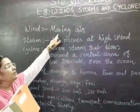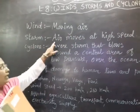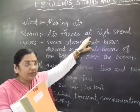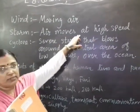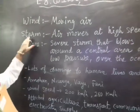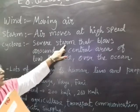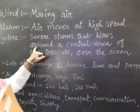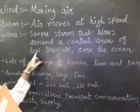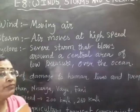We know that wind is moving air. But when air moves at high speed, it is called a storm. When a storm is covered in a cyclone, that is a severe storm that blows around a central area of low pressure over the ocean, it is called a cyclone.